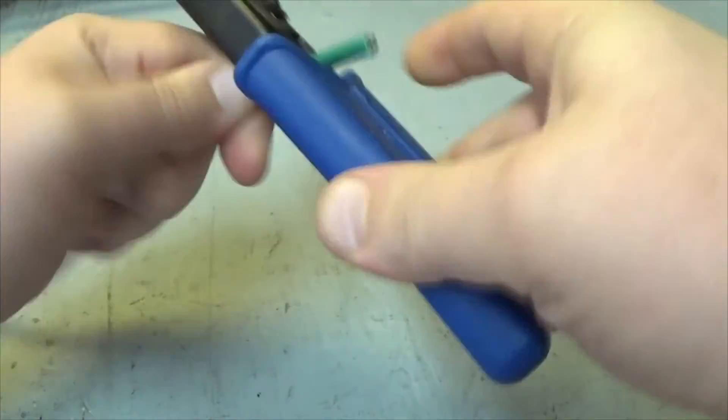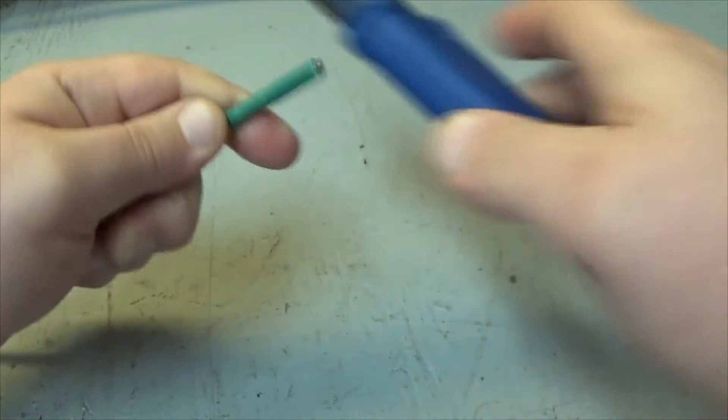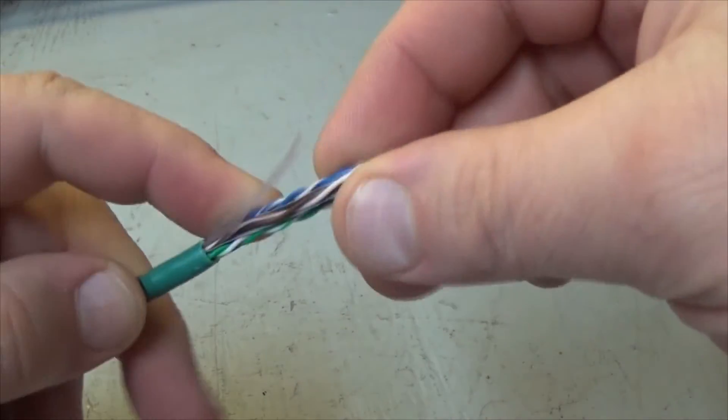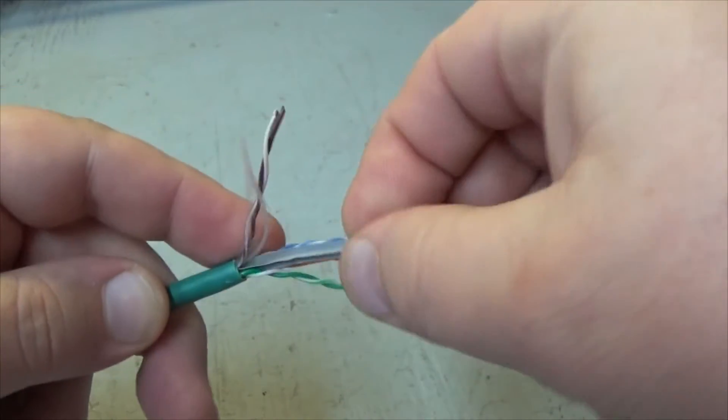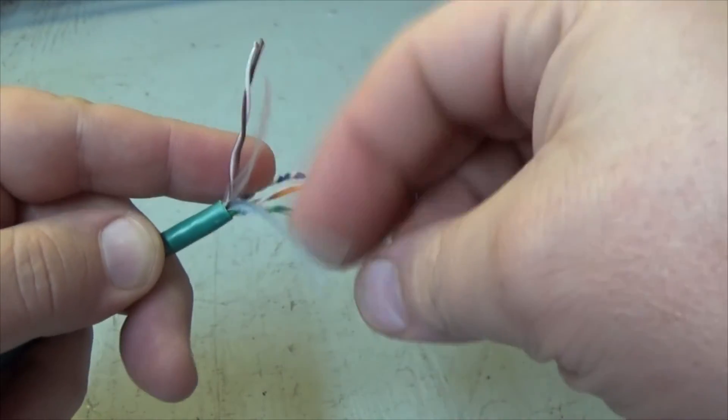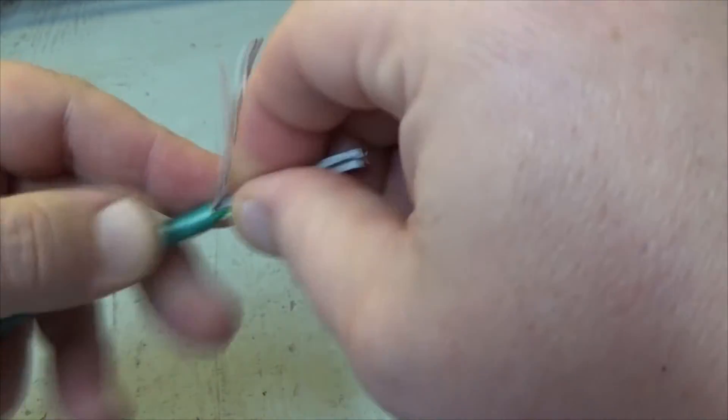Getting started by cutting the sheathing off one end of the wire and this is way more wire than I need. Better to have and not need than need and not have. With the sheathing removed, I'm going to separate all the wires, untwist them and this is actually a piece of Cat 6 so I got the center tubing. I'm going to cut this out. Don't need that.